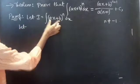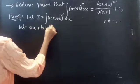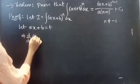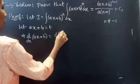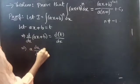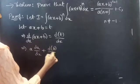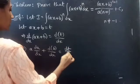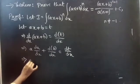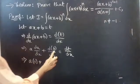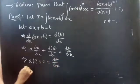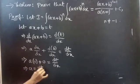Let Ax + b equal to t. Now differentiate both sides with respect to x. We get d/dx of (Ax + b) equals dt/dx. A times dx/dx plus d(b)/dx equals dt/dx. Here b is a constant and A is also a constant. So A times 1 plus 0 equals dt/dx, giving us A equals dt/dx.